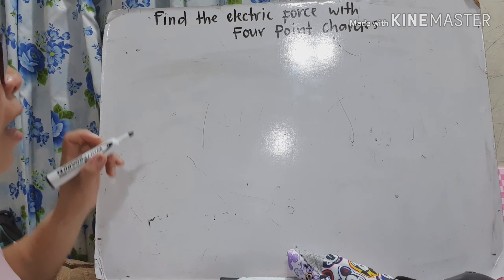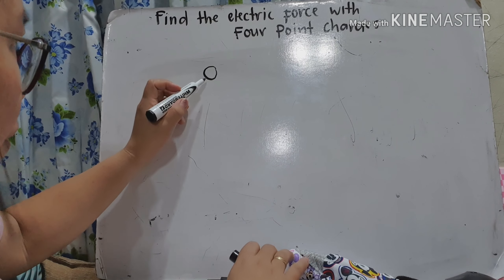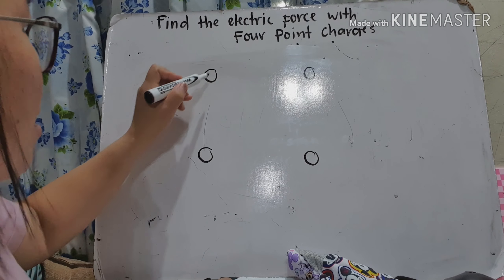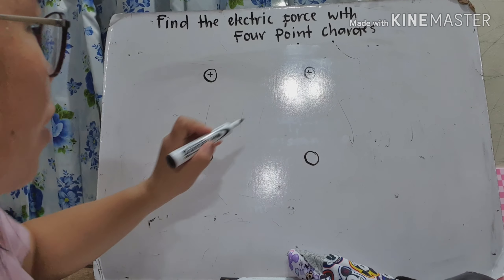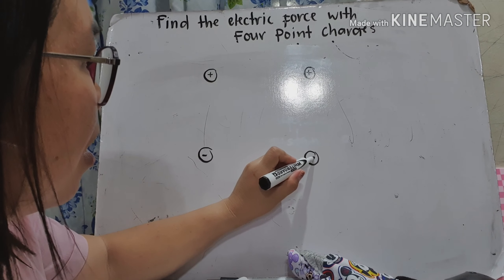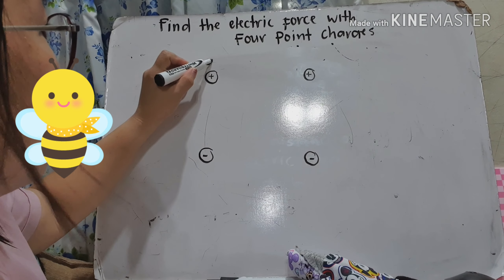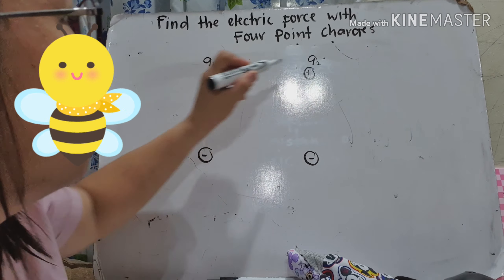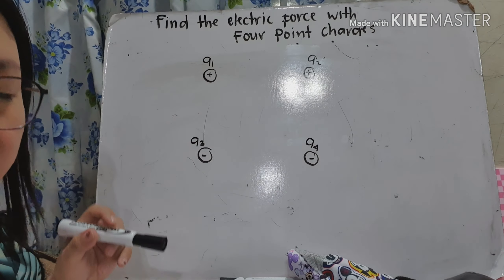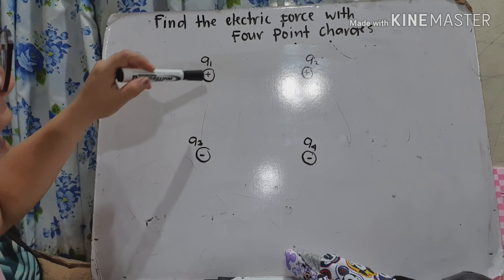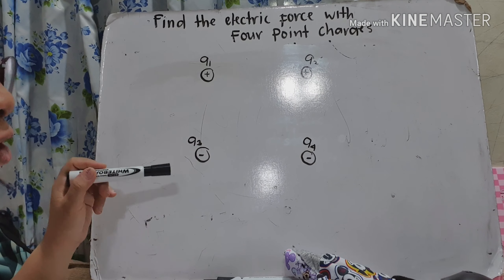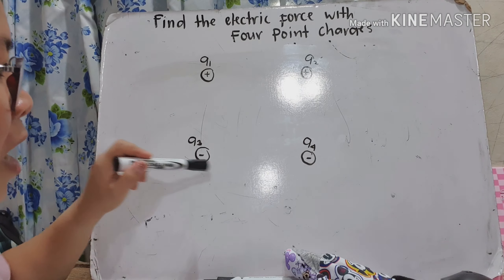Let's illustrate the problem. We have four point charges at the corners of the square. The two upper charges are positive, named Q1 and Q2, and the two lower charges are negative, named Q3 and Q4. Q1 is equal to Q2, equal to positive 2.8 times 10 raised to negative 6 coulombs. Q3 is equal to Q4, equal to negative 2.8 times 10 raised to negative 6 coulombs.